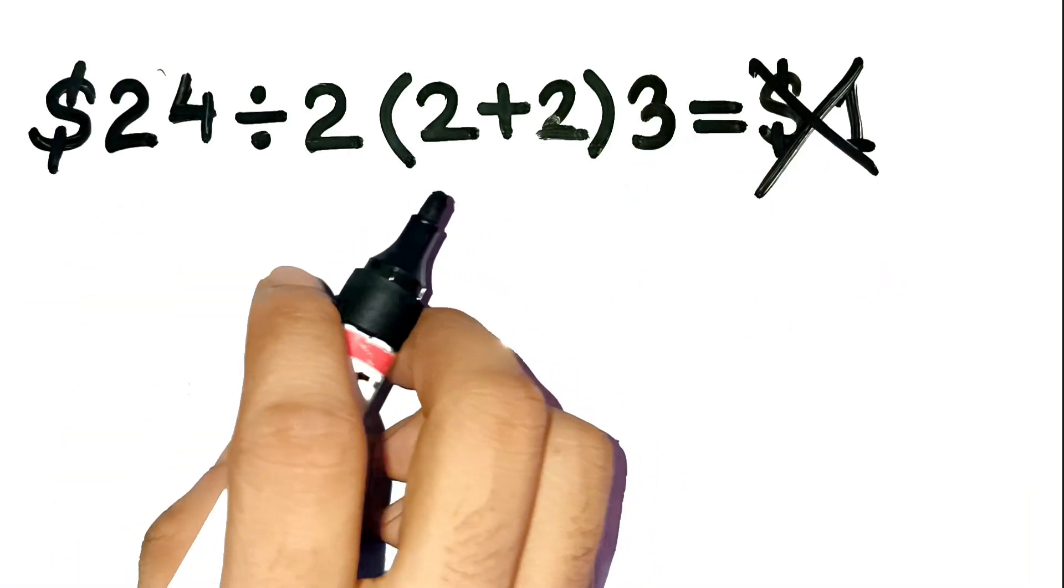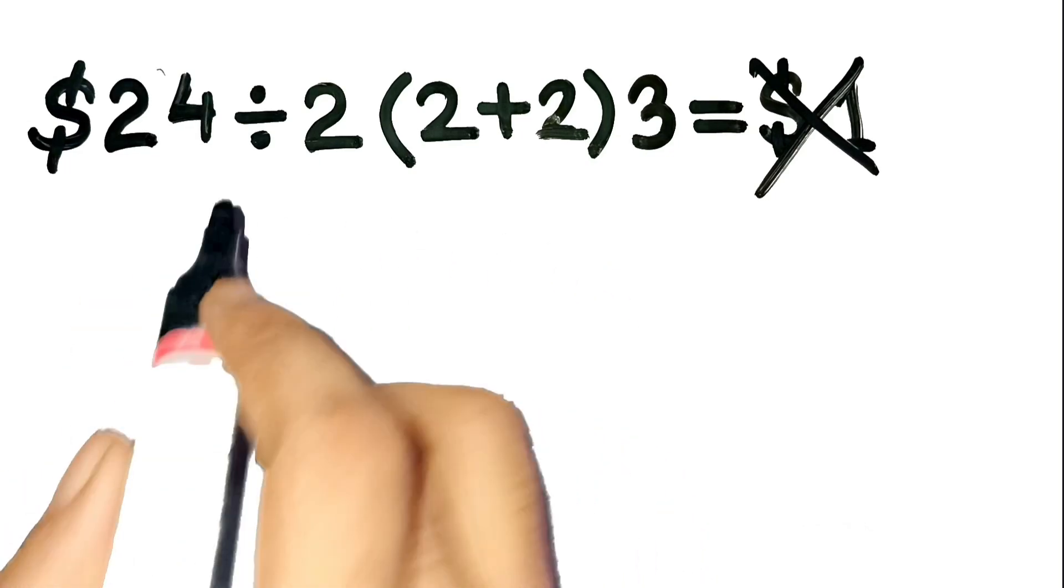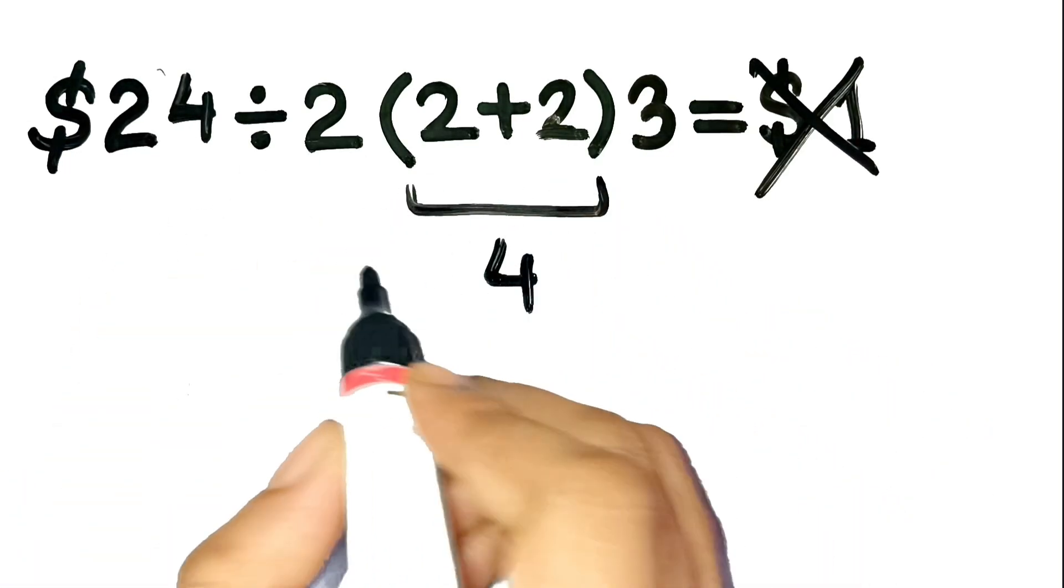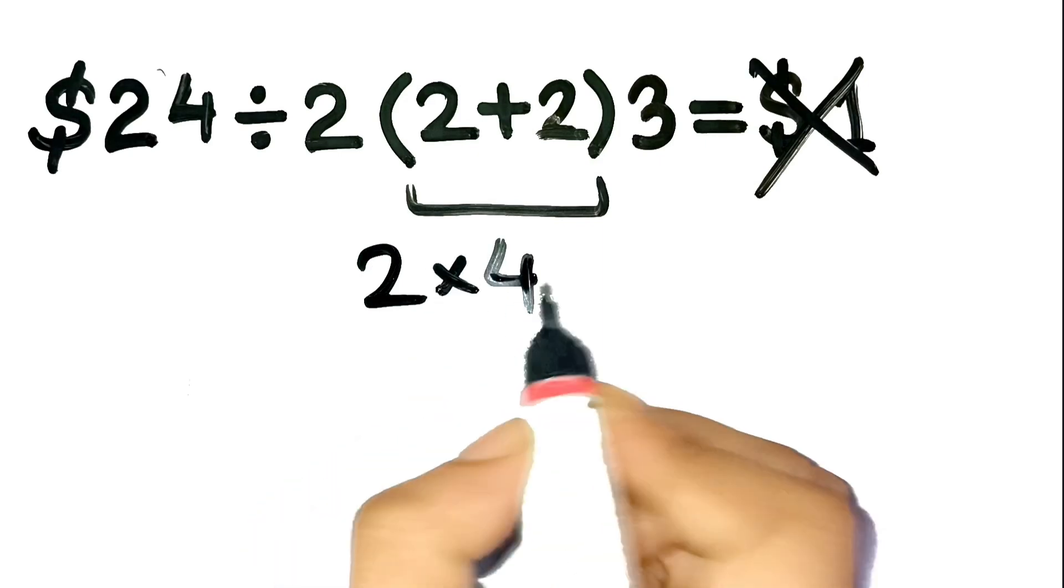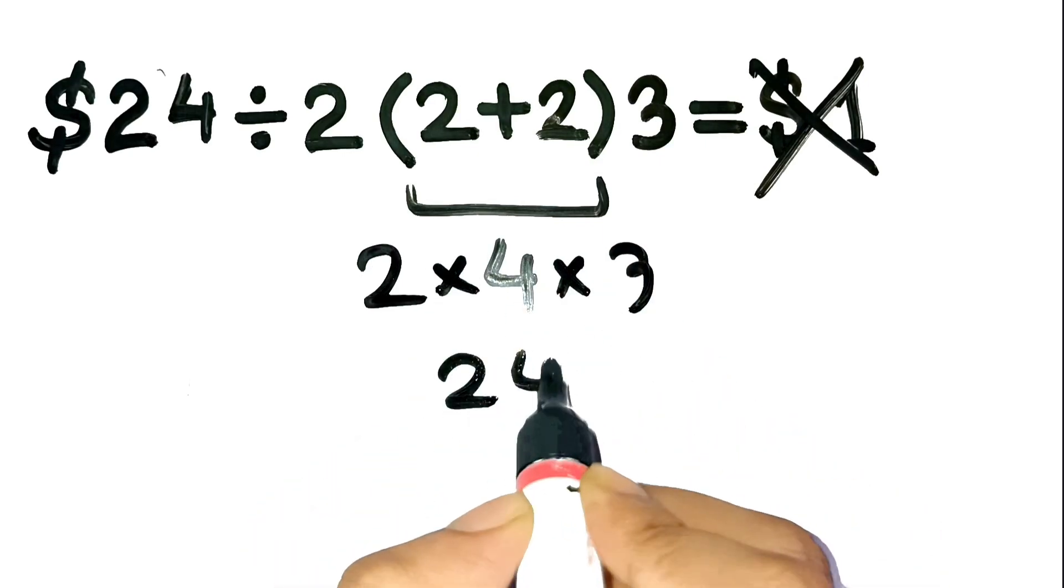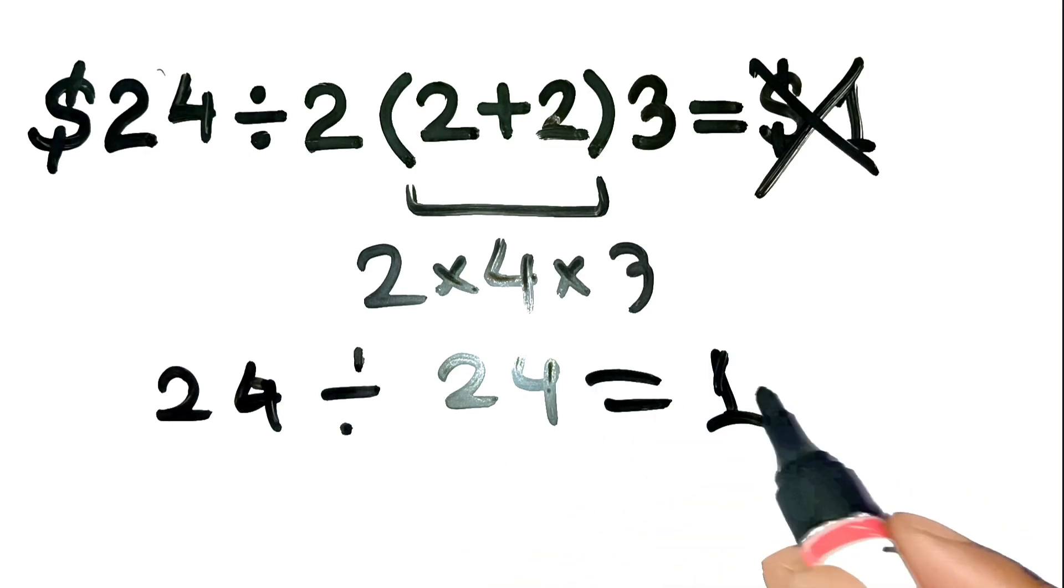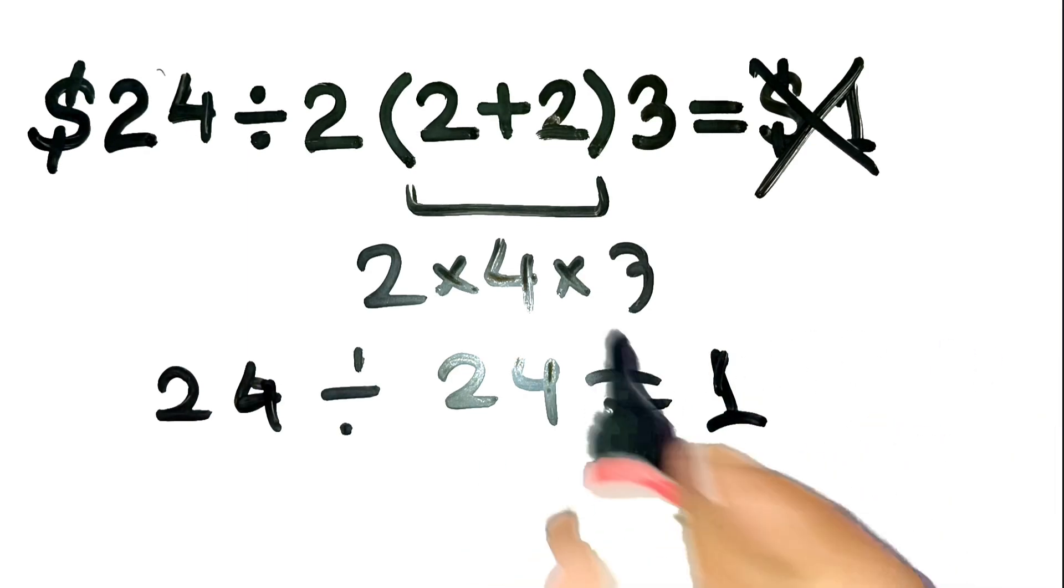Now, almost everyone looks at this and goes, okay, 2 plus 2 inside parenthesis gives 4, then they multiply 2 times 4 times 3, which gives 24, and finally, 24 divided by 24 equals $1. Simple, right? Well, not quite.